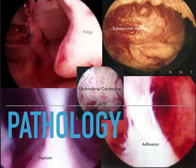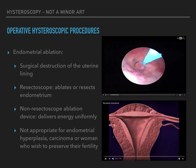Here is some of the pathology seen on hysteroscopy: a polyp, a submucous fibroid, endometrial carcinoma, a septum, and an adhesion.